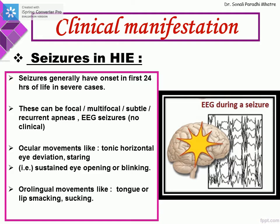Seizures in HIE generally have an onset in the first 24 hours of life in very severe cases. These can be focal, multifocal, or subtle seizures, or recurrent apnea. Sometimes seizures can be EEG-based only, with no clinical manifestation. Ocular movements like tonic horizontal eye deviation, staring, or sustained eye opening or blinking can be a form of seizure, as can orolingual movements like tongue or lip smacking and sucking.